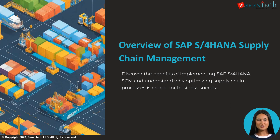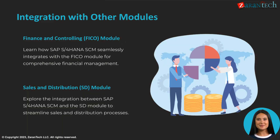Let's start with an overview. SAP S/4HANA Supply Chain Management, or SCM, is the latest evolution of SAP supply chain software. It provides real-time visibility and control over your supply chain with predictive analytics and intelligent technologies. Key benefits include increased efficiency, lower costs, and better customer service, with the ability to optimize planning, manufacturing, logistics, and more. Implementing SAP S/4HANA SCM can give your business a real competitive advantage.